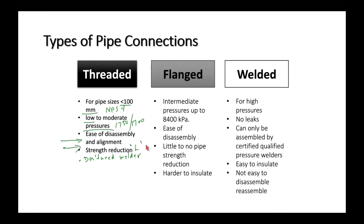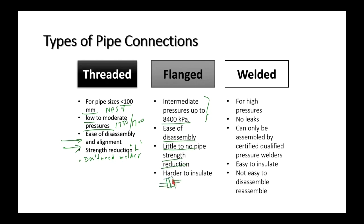Flanged connections are used for more intermediate pressures — up to about 8400 kPa. You can still disassemble and reassemble. There's little to no pipe strength reduction, but insulation becomes difficult around flanges — you need boxes around them.